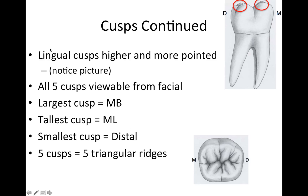The lingual cusps are actually a little higher and more pointed than the buccal cusps. From a buccal view you can see those lingual cusps peeking out above the buccal cusps, and you can see all five cusps. Quick review: the largest cusp is the mesial buccal, the tallest is the mesial lingual, the smallest is the distal, and there are five triangular ridges corresponding to the five cusps.